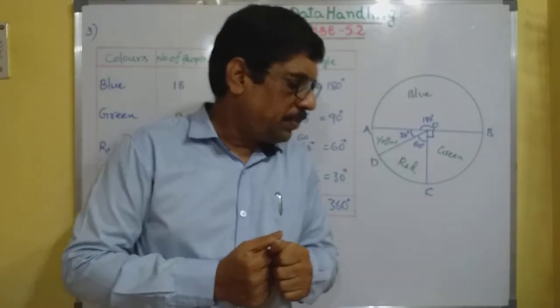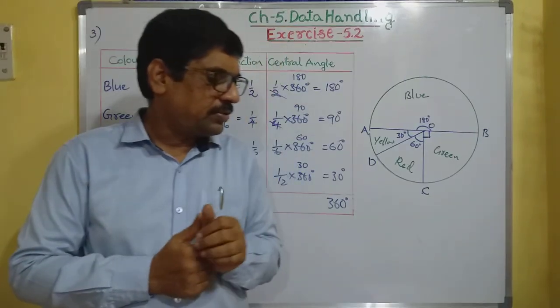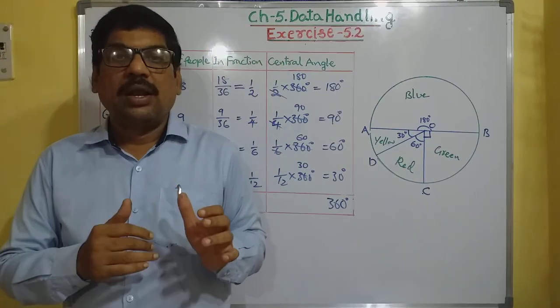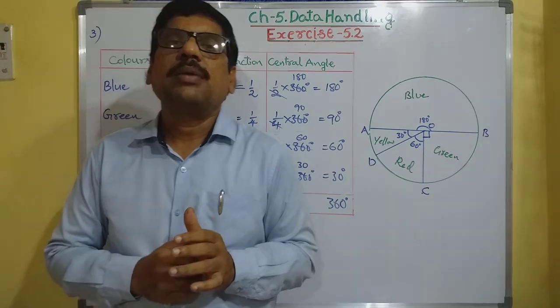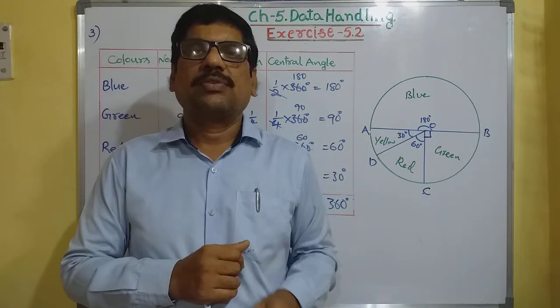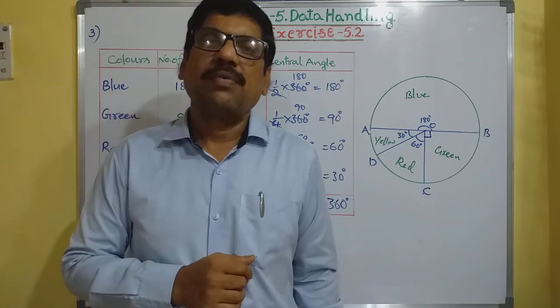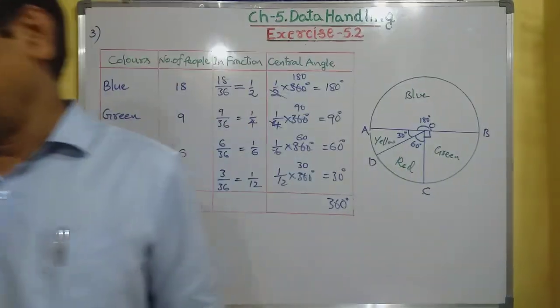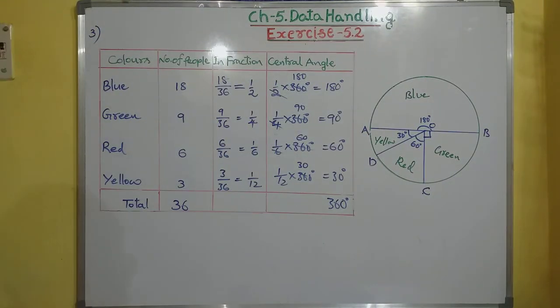So we have completed three problems from this exercise. To draw a pie chart: write each value as a fraction of the total, multiply by 360° to get the central angle, then draw the sectors using a protractor. We will continue the remaining problems in the next class. Thank you, have a nice day.